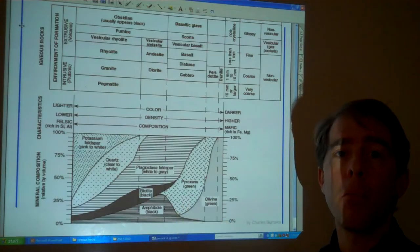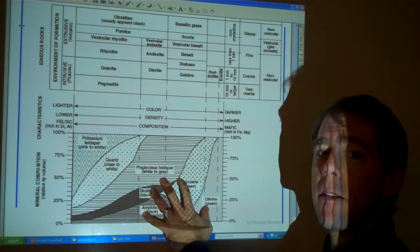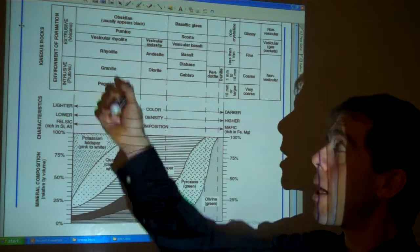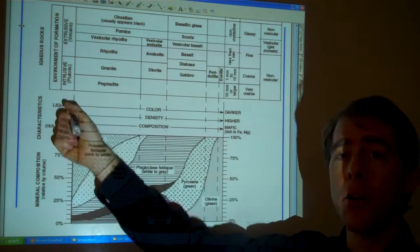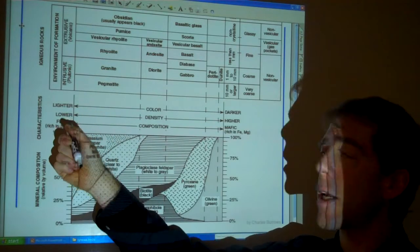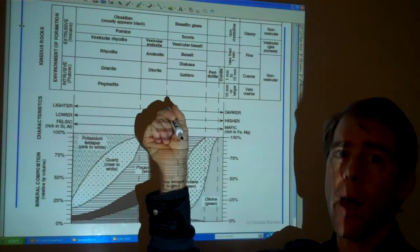What I want to talk about now is this bottom part. This is a really important part of the reference table. It shows you what minerals make up each of these rocks. And it's those minerals that determine these characteristics, whether it's lighter in color, lower in density, or felsic or mafic. The composition determines that.